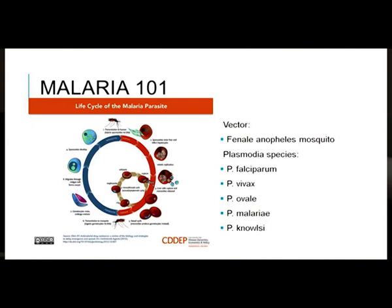Just a recap on the malaria life cycle. The vector is the female Anopheles mosquito. The mosquito will bite a human, inject the sporozoites that will infect the hepatocytes, and will multiply, form a schizont, and then rupture. The merozoites will then be released into the bloodstream, where they will infect erythrocytes.